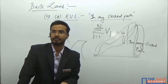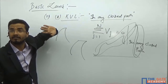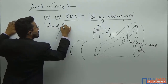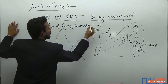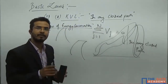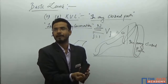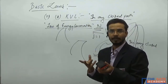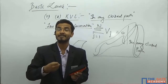Whatever energy you will provide to the system, the entire energy you must lose — whether you dissipate it or store it. So KVL is basically based on the law of energy conservation. Total energy in any closed path must have to be zero — whatever voltage you will provide, that must have to get consumed by the passive components. Any active component provides energy to the system, and that energy must be received by the passive components.